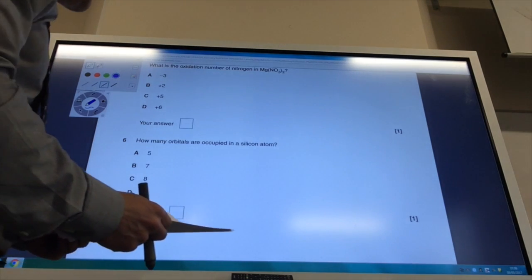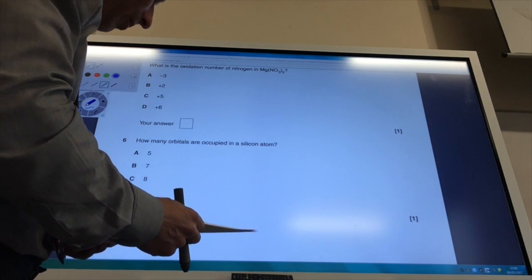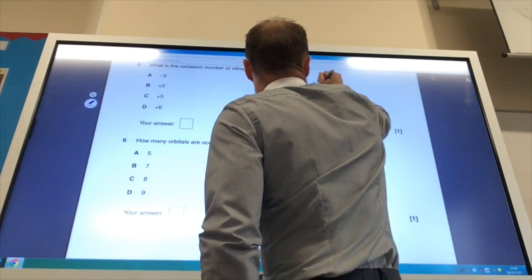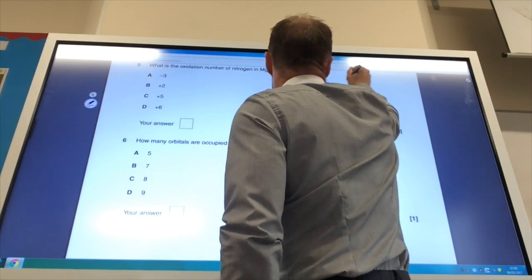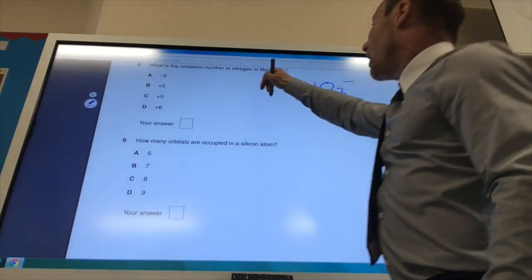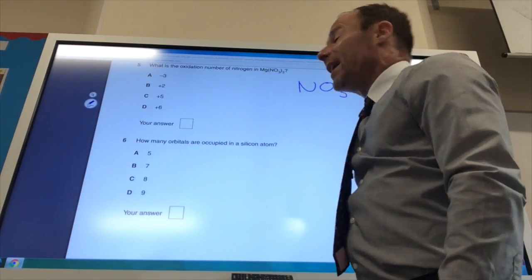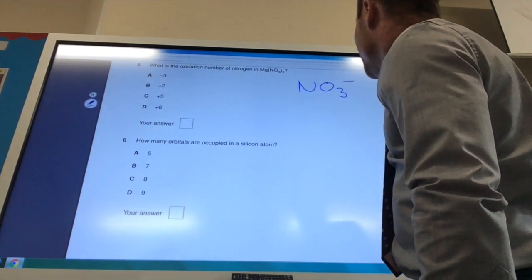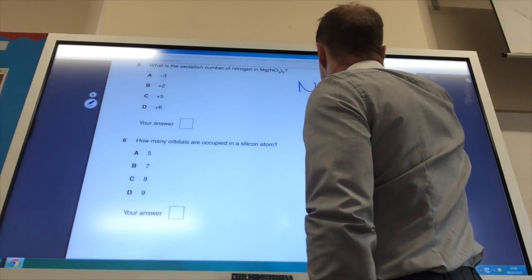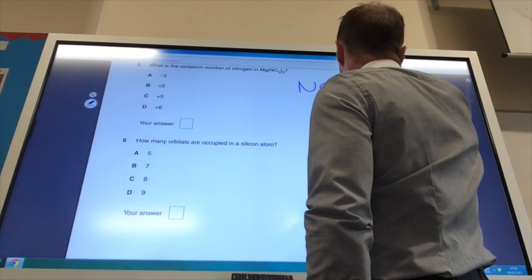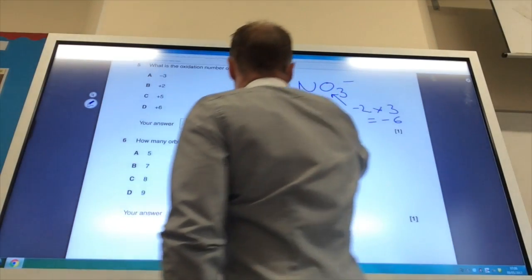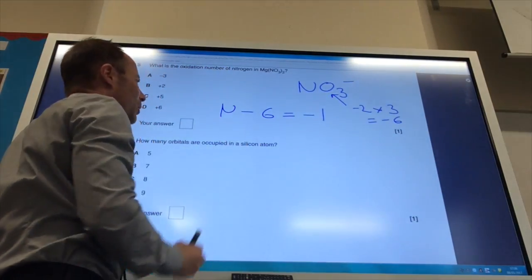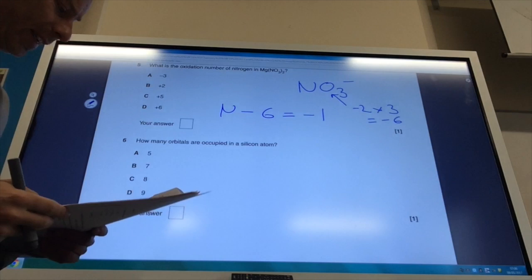What is the oxidation number of nitrogen in magnesium nitrate? You should know that nitrate ion is NO3 minus, but even if you don't, magnesium is in group 2 so it's got 2 plus charge. Because you've got 2 nitrates, each nitrate must have a minus charge. Oxygen is minus 2, minus 2 times 3 is minus 6, so whatever nitrogen is, minus 6 must add up to minus 1, and therefore nitrogen is plus 5. The answer is C.